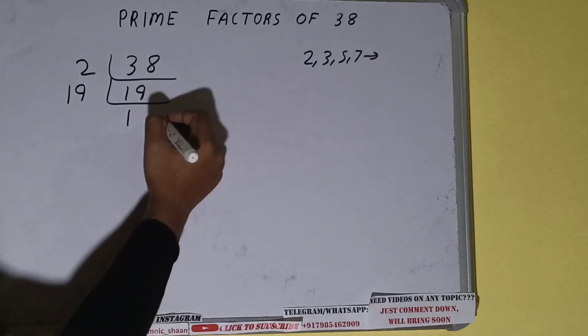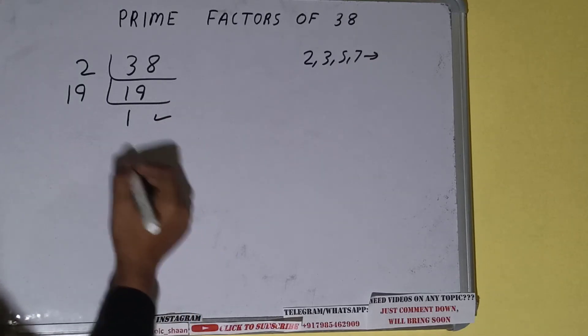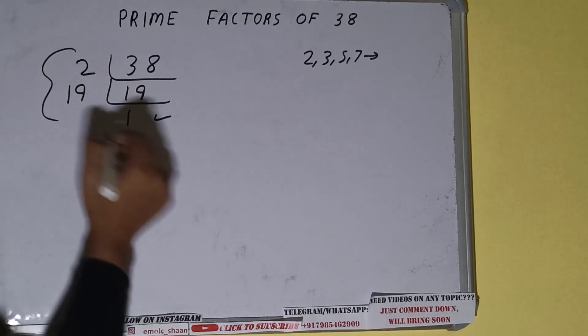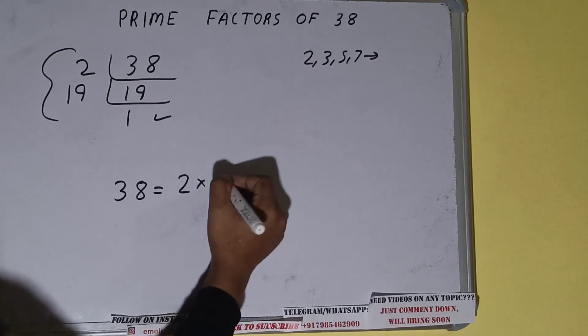Once we get 1 we need to stop and do one last thing that is prime factors of 38 will be whatever we have on the left hand side that is 2 cross 19.